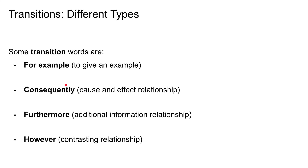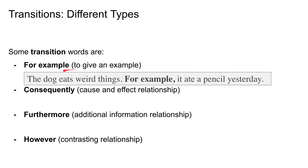Moving forward, there are different types of transitions. Some transition words — for example, 'for example' — which we use to give an example, to introduce an example. So: 'The dog eats weird things. For example, it ate a pencil yesterday.' We can see that the second sentence is an example of the first sentence.